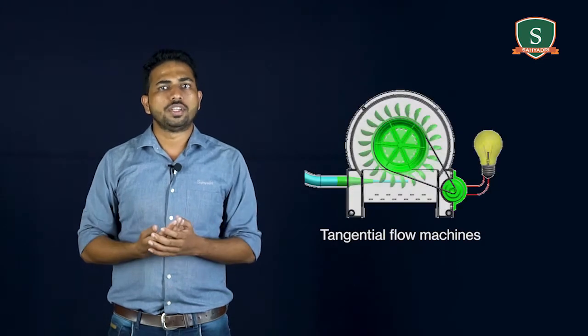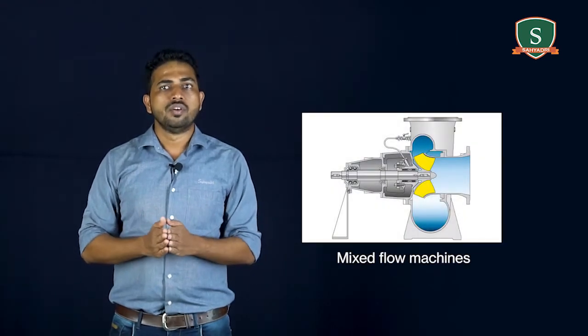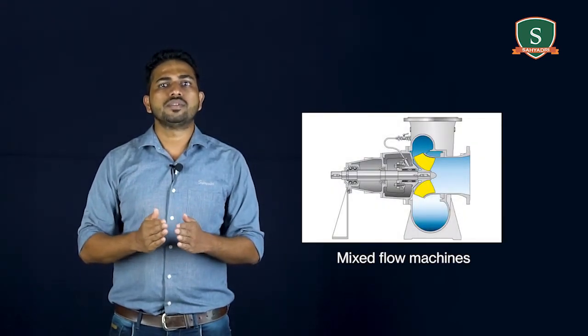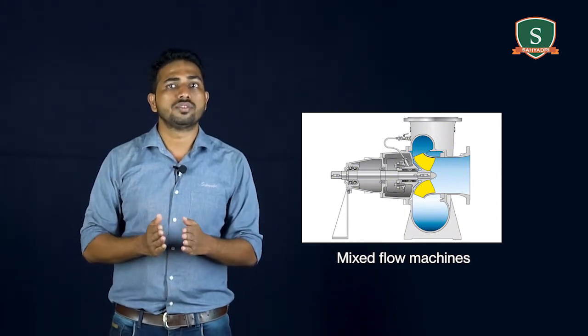Tangential flow machine: fluid enters tangentially to the rotor. Example, pelton wheel. Mixed flow machines: fluid enters axially but leaves radially through the rotor. Examples: modern Francis turbine, mixed flow pump.